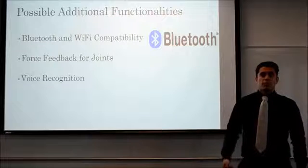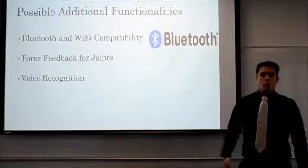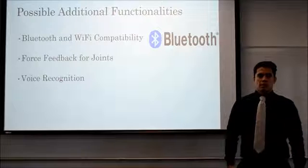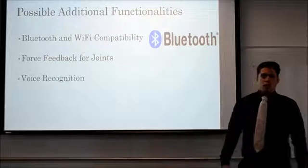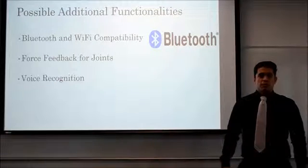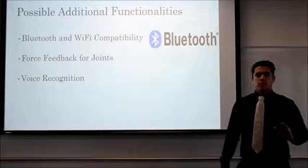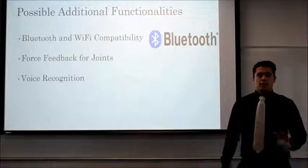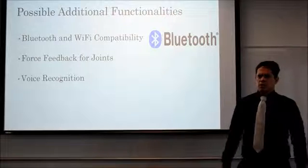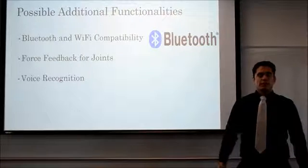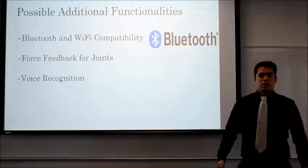For possible future functions, we want to add Bluetooth or wireless connectivity to cellular devices. Another feature is a possible feedback reaction — for example, if someone pushes the robot, it pushes back to provide a more humanoid feel. The last feature we want to add is voice recognition, so the robot can respond to commands like sit down, stand up, or roll over. Thank you very much.